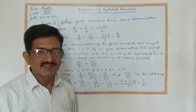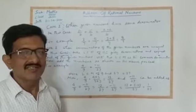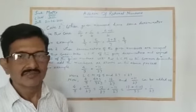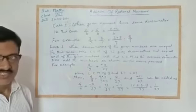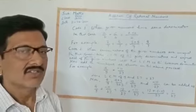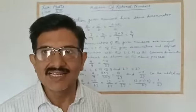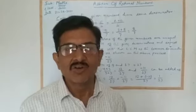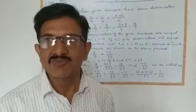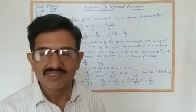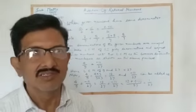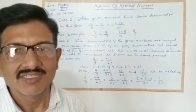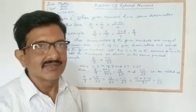Hello students, today we will learn how to add two or more rational numbers. First of all, we should notice whether the two given rational numbers have the denominator in positive or not. If the denominators are not positive, then first of all we should convert all the denominators to positive. Then we should add the numbers.